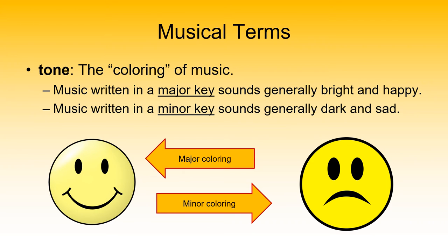When we refer to tone, we're talking about what you might describe as the color or coloring of music. Some music is written in a major key, which in our country we normally perceive as bright and happy, while other music is written in a minor key, generally perceived here as dark or sad. Realize that's a cultural thing — while major and minor exist in all cultures, in some cultures playing in a minor key is considered the norm and doesn't sound sad to those people at all.